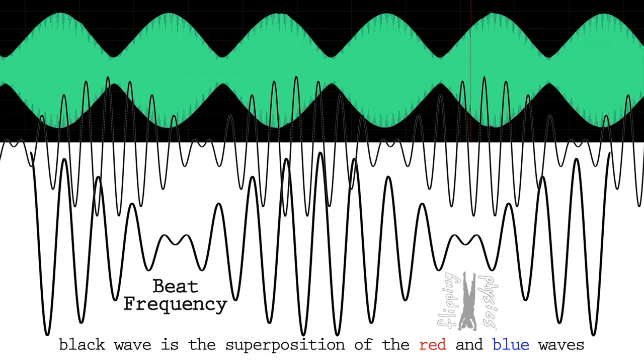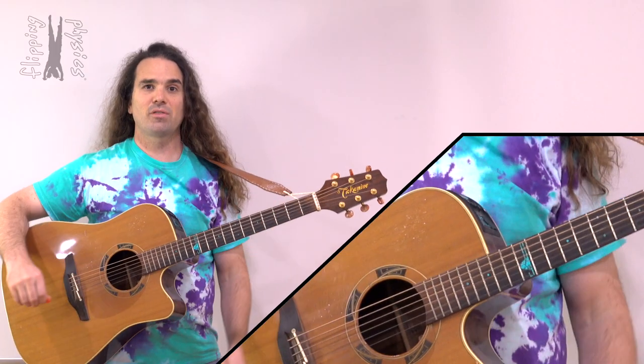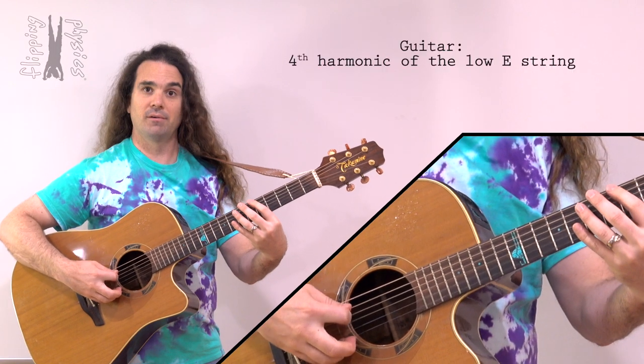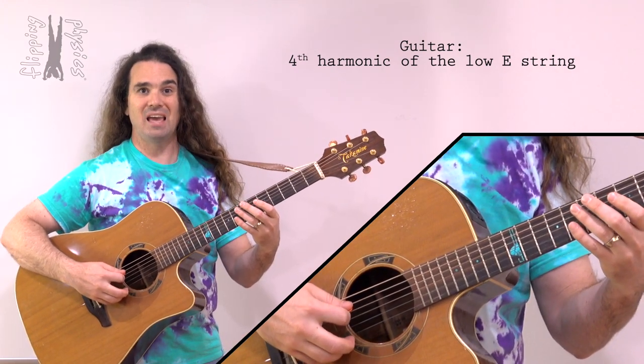The top wave is the audio recording of beats and the bottom wave is an ideal representation. A practical application of this is that beats are a useful way to tune some musical instruments. For example, on a guitar, the fourth harmonic of the low E string is at the same frequency as the third harmonic of the A string.